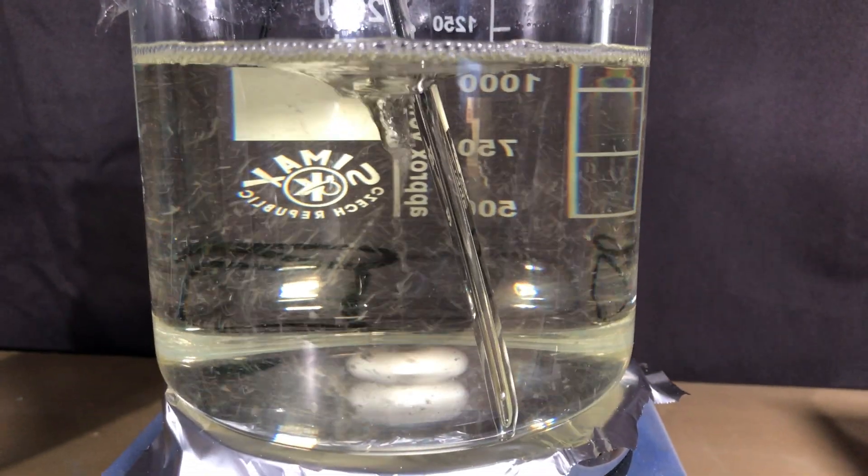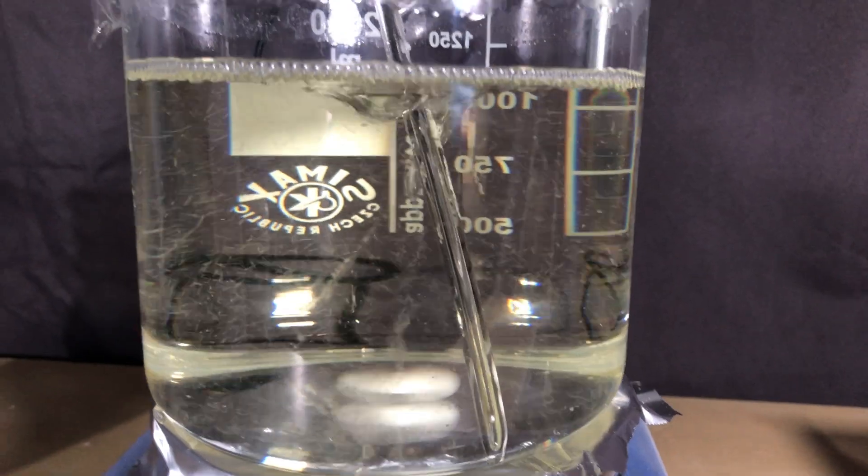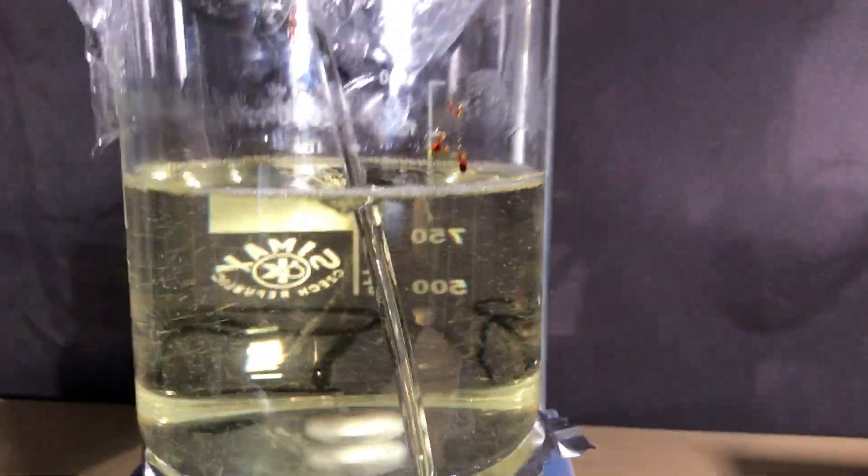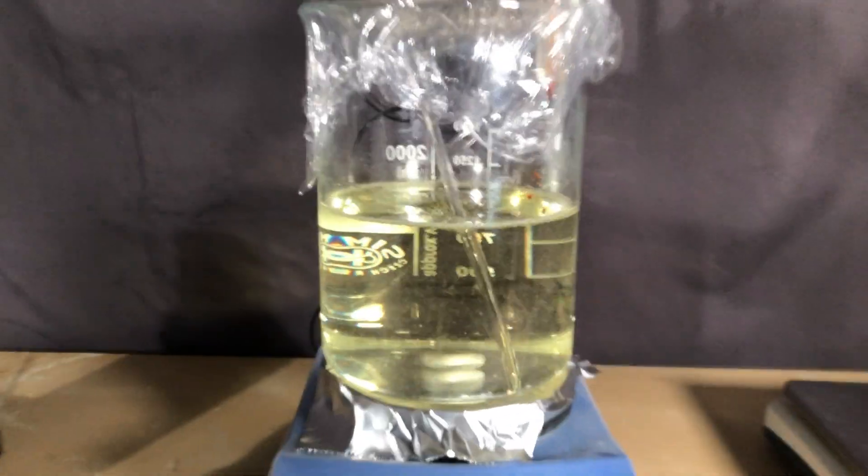The next step is going to be the bromination and to brominate the vanillin we are going to add the bromine very slowly. You want to keep the temperature below 20 degrees celsius because if it gets too hot you get unwanted side products.